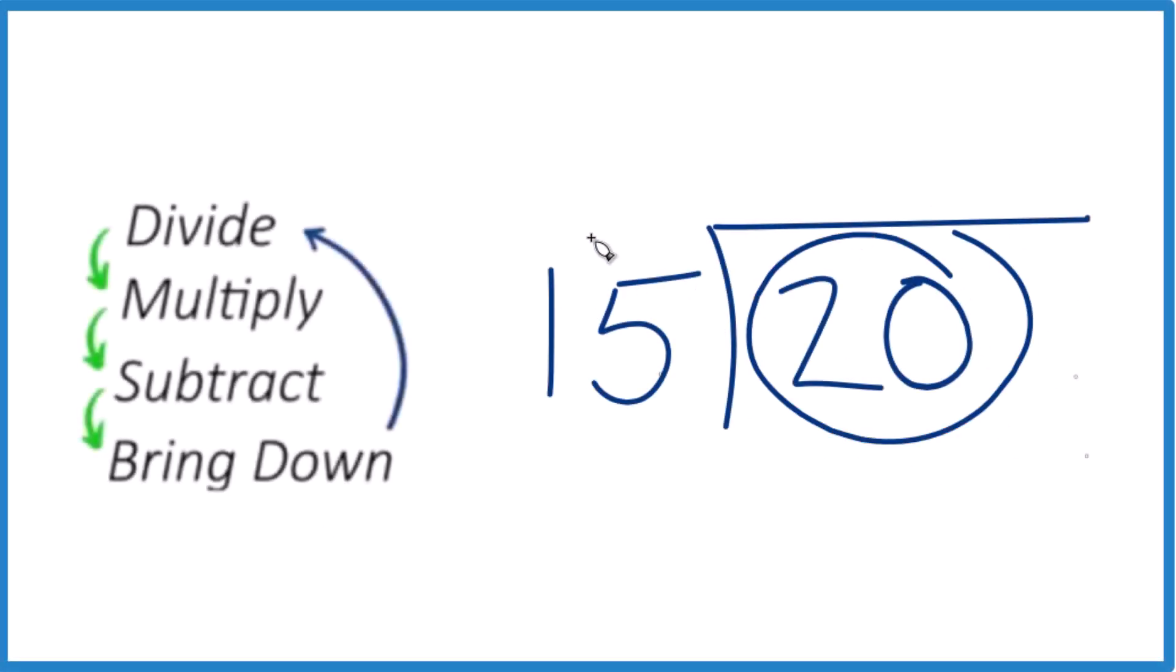So let's divide 20 by 15. How many times does 15 go into 20? We know it goes in there at least once, one point something.